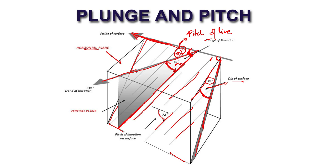You can imagine the plunge amount as the apparent dip. The true dip amount is 55 degrees, measured at 90 degrees from the strike line. If measured at another angle — other than 90 degrees — you get an apparent dip, which is less than the true dip. So the plunge amount is like the apparent dip in this direction, at 72 degrees from the strike line rather than 90 degrees.